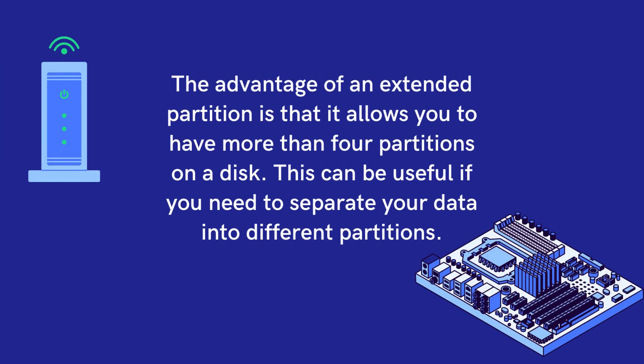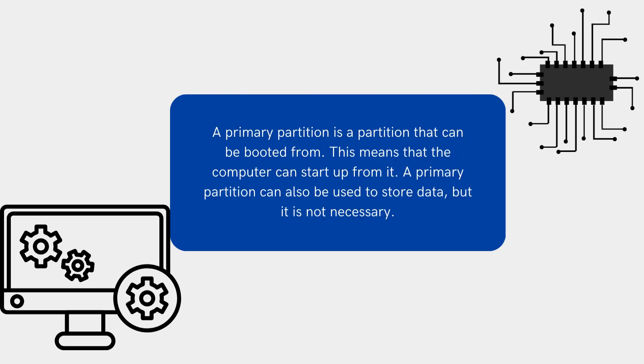The advantage of an extended partition is that it allows you to have more than four partitions on a disk. This can be useful if you need to separate your data into different partitions. A primary partition is a partition that can be booted from, meaning that the computer can start up from it. A primary partition can also be used to store data, but it is not necessary.